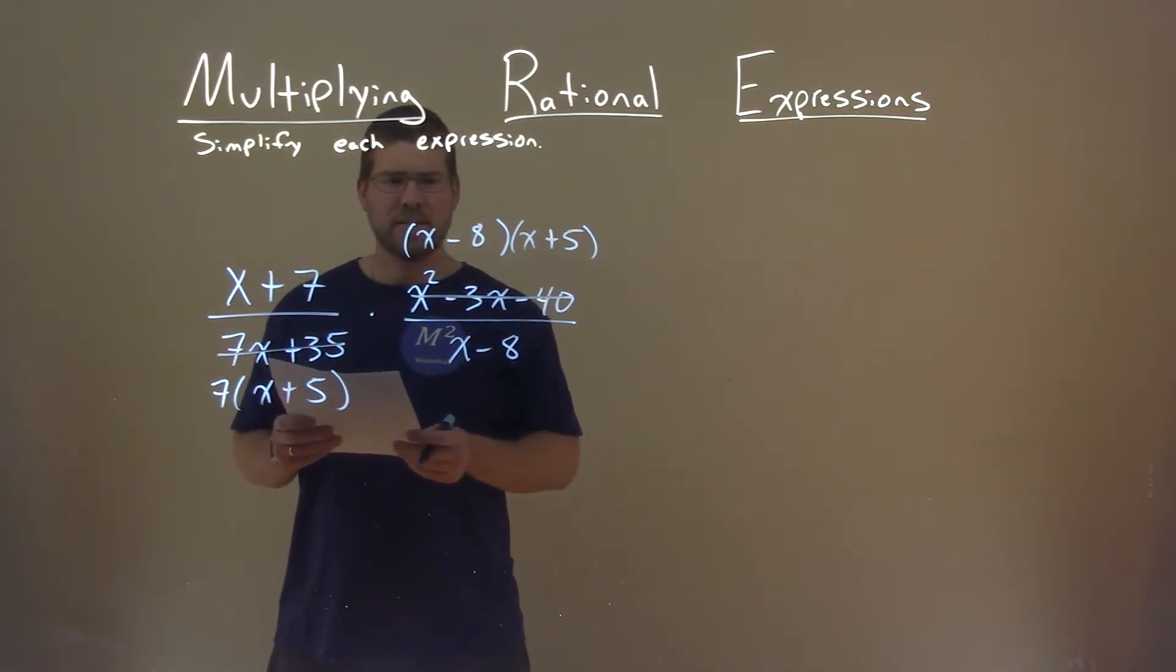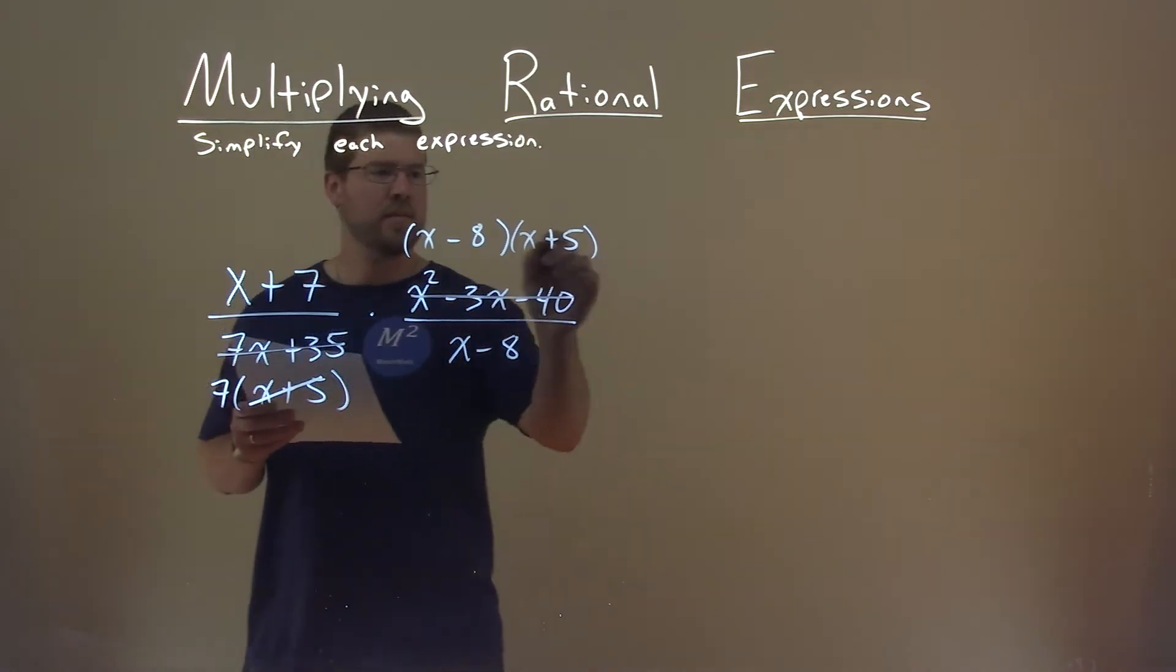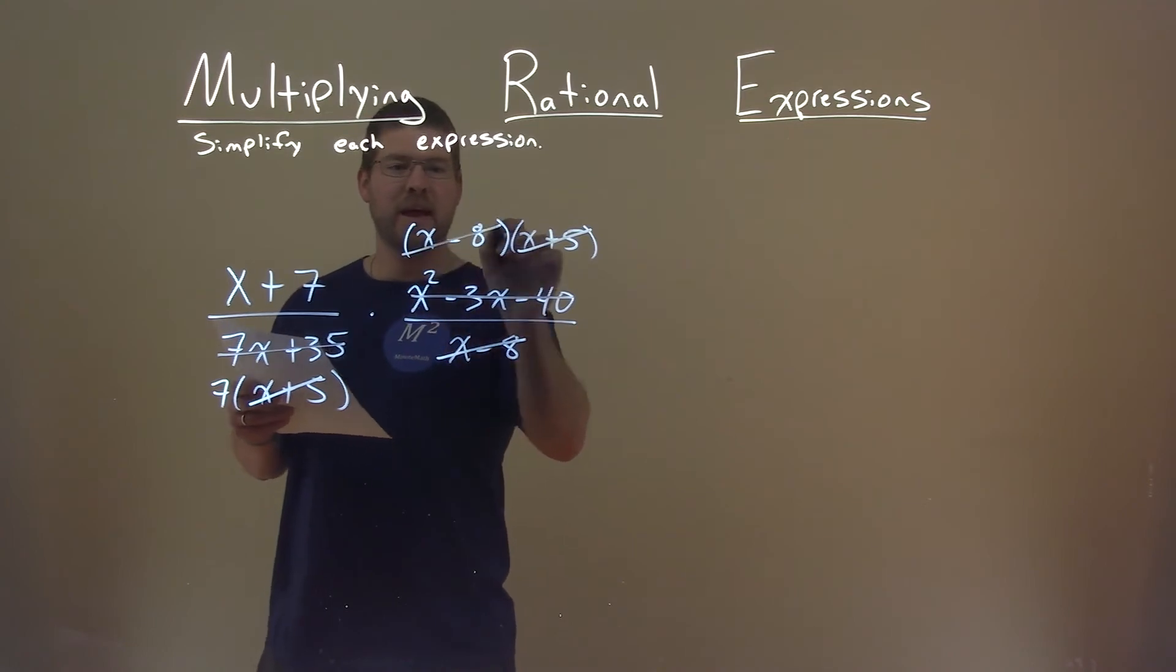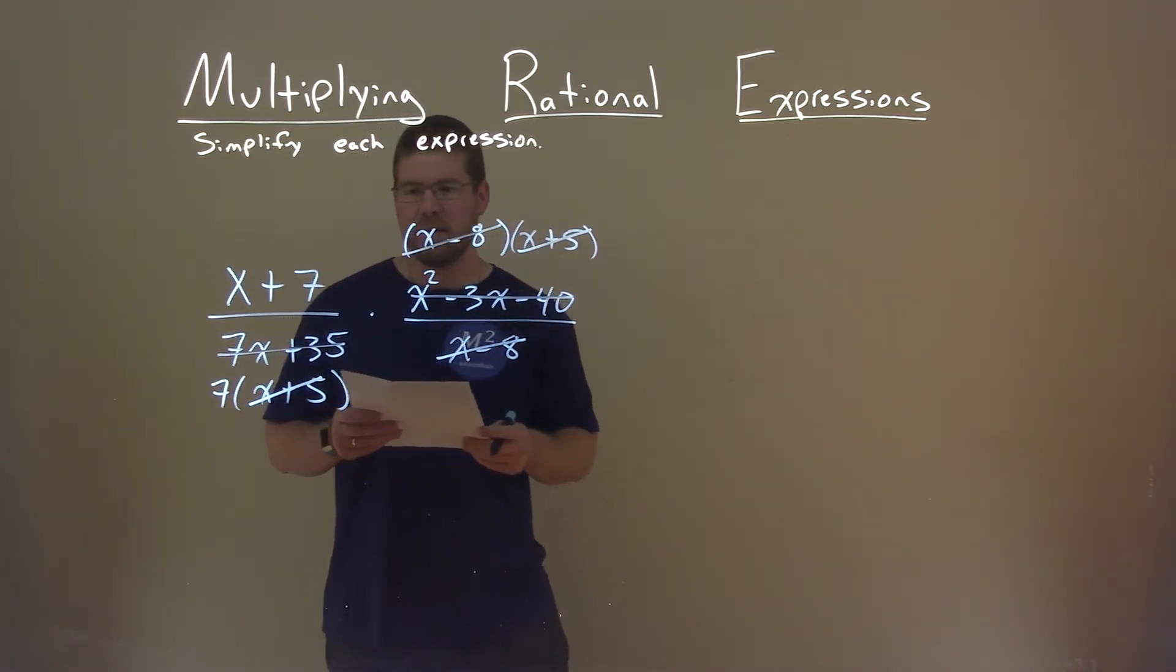And, well, now I see some things that I can cancel out. We have an x plus 5 down here, x plus 5 up here. x minus 8 here and an x minus 8 there. And I think that's it. That's all we can cancel out.